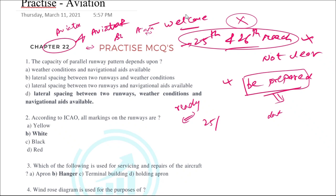Starting with today's video, we have 65 plus practice questions in our book. I'll be explaining all of them with answers. Starting with the first question: the capacity of parallel runways.